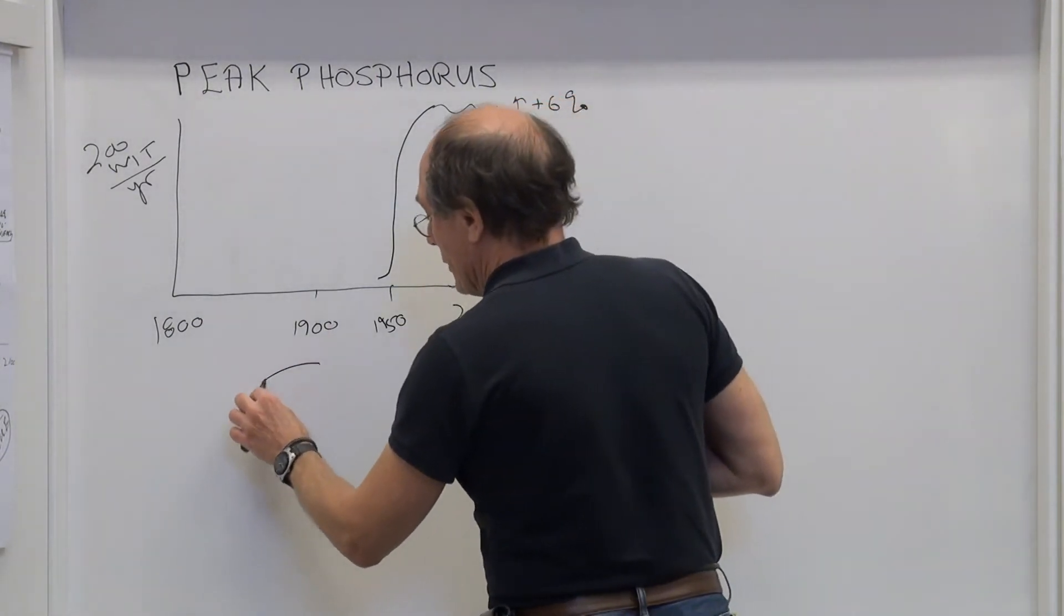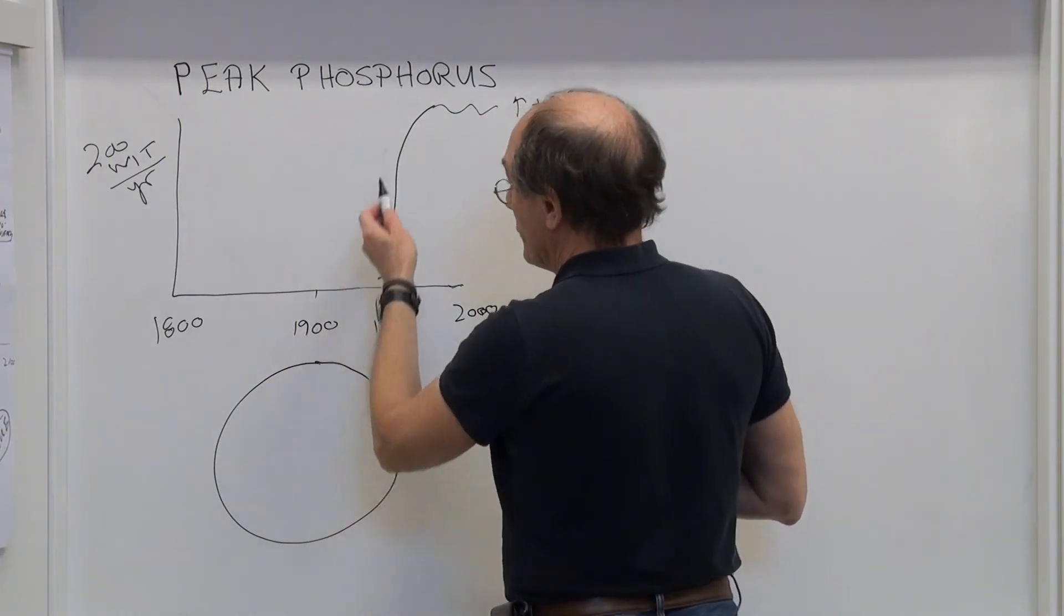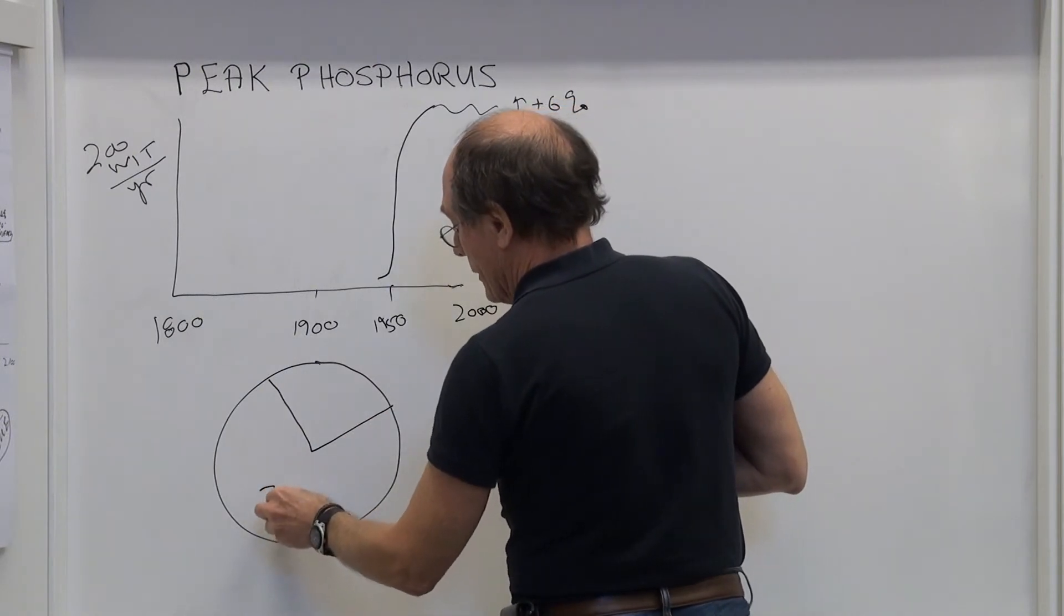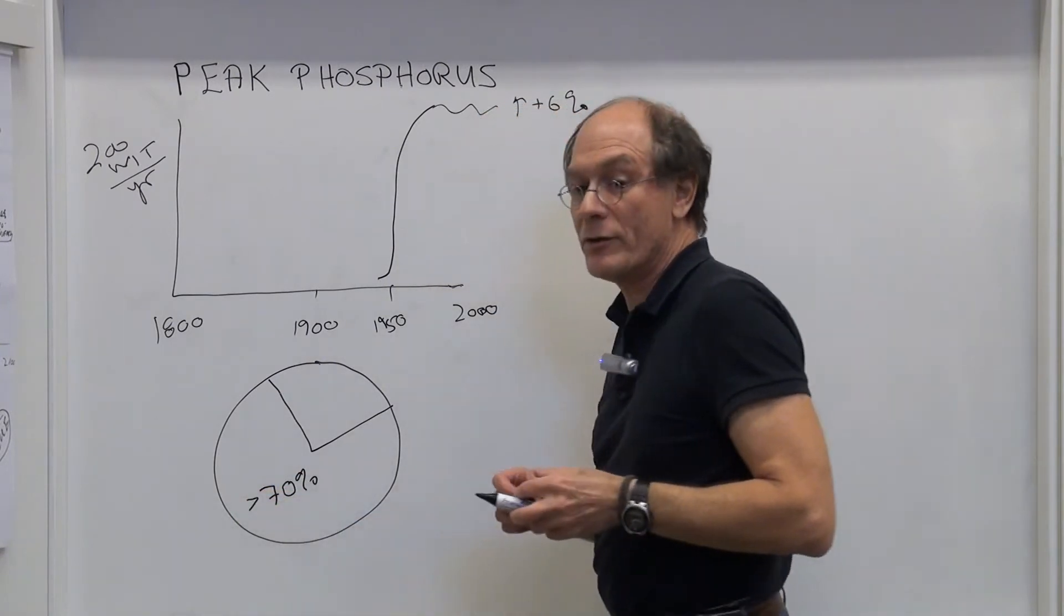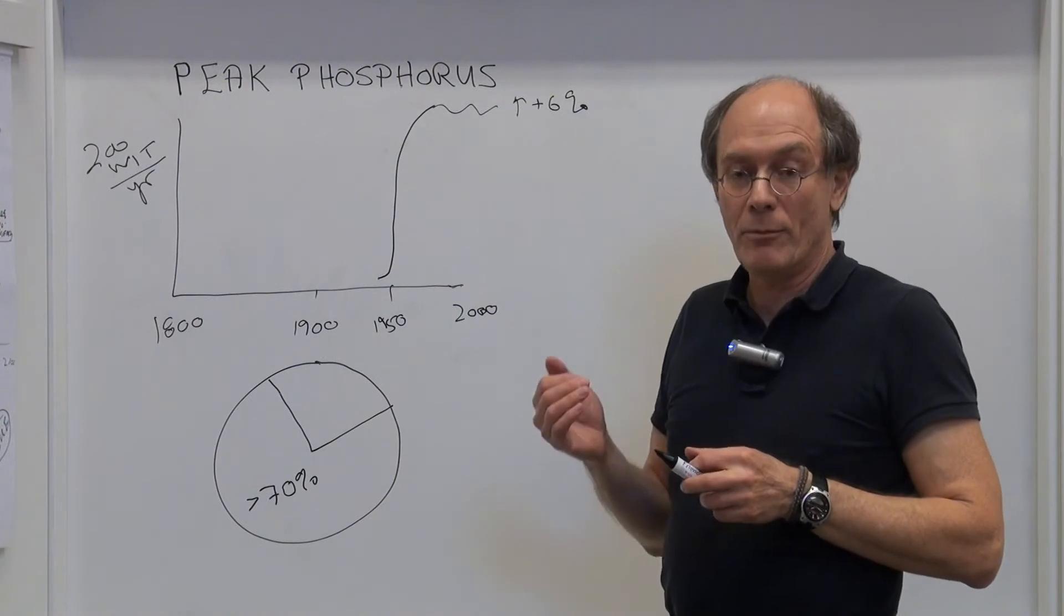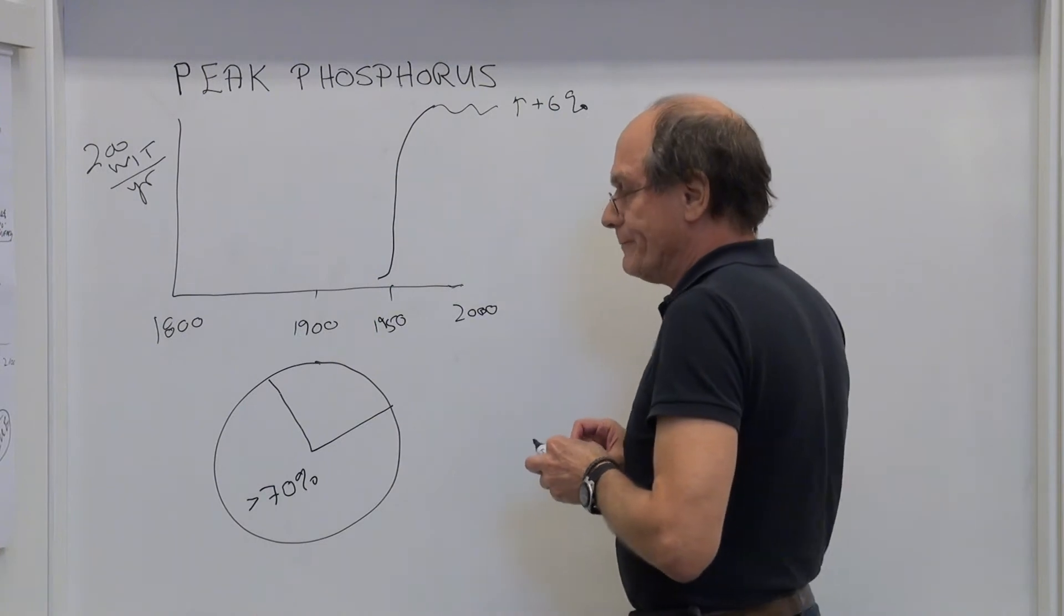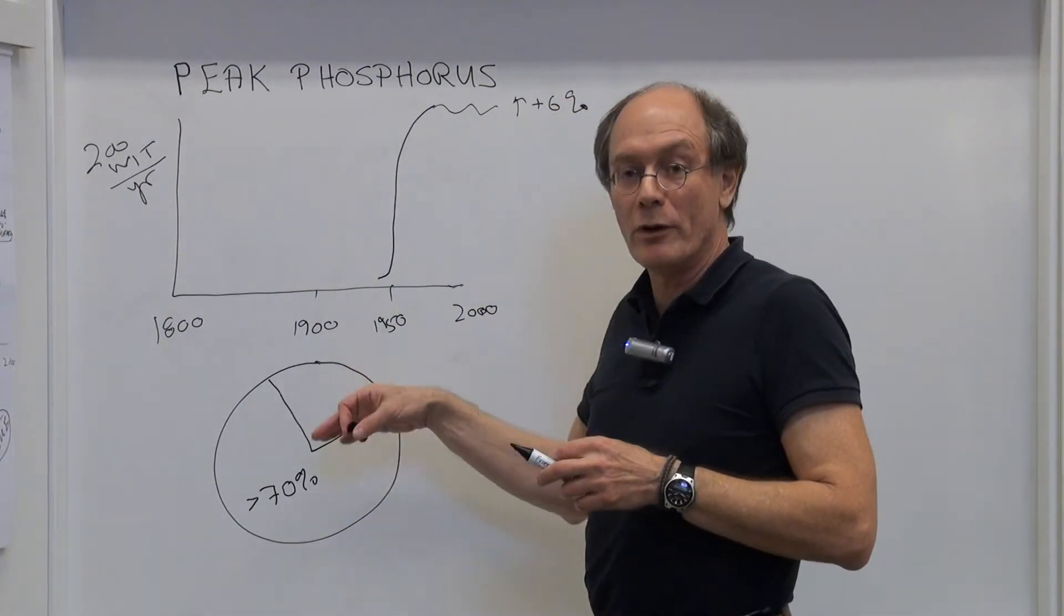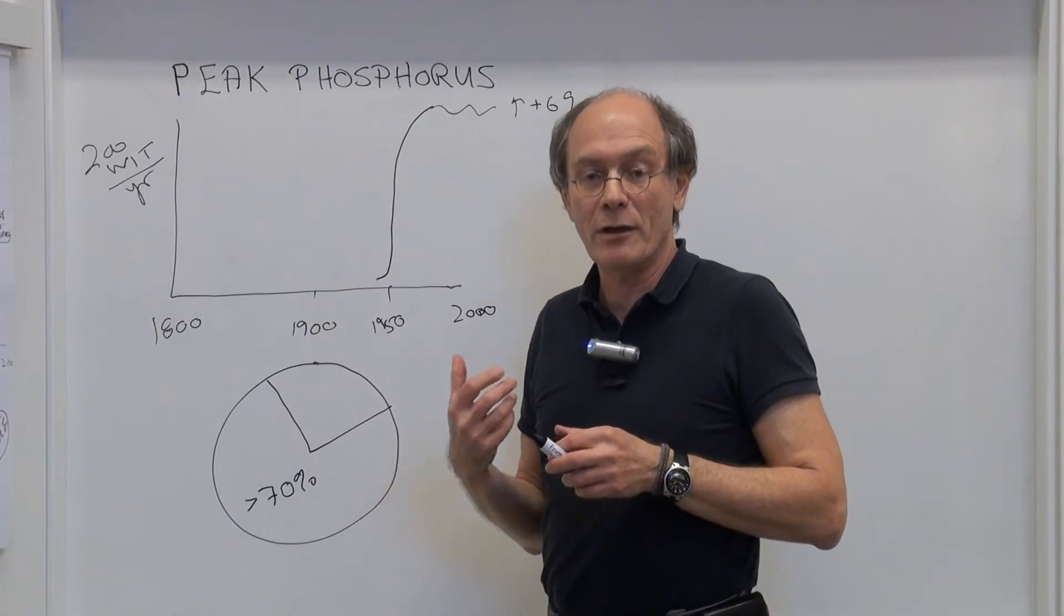One of the reasons why it's of major concern is if you look at where these reserves are. According to the US Geological Survey, over 70% of this is coming from one country, and that's Morocco, and an occupied territory adjacent to Morocco called West Sahara. Obviously there are some geopolitical implications when the whole world depends on one country for its very important fertilizer source.